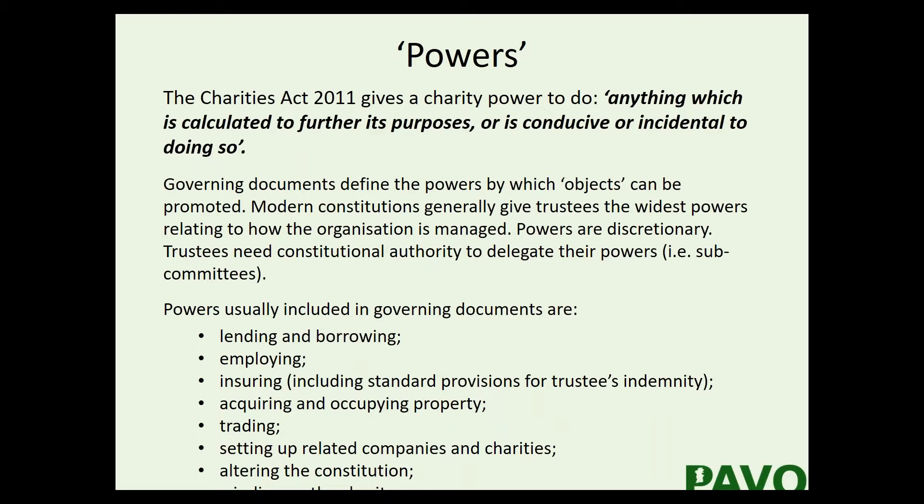Listed powers typically include employing staff, taking out insurance - professional indemnity or public liability - acquiring and occupying property, taking out a lease or buying the freehold, and trading. Some charitable constitutions actually bar trading altogether, particularly permanent trading activity, primarily to stop trading from skewing the objectivity of the charity - once you get involved in trading it can become all-consuming and take over from the service you were actually set up to deliver.